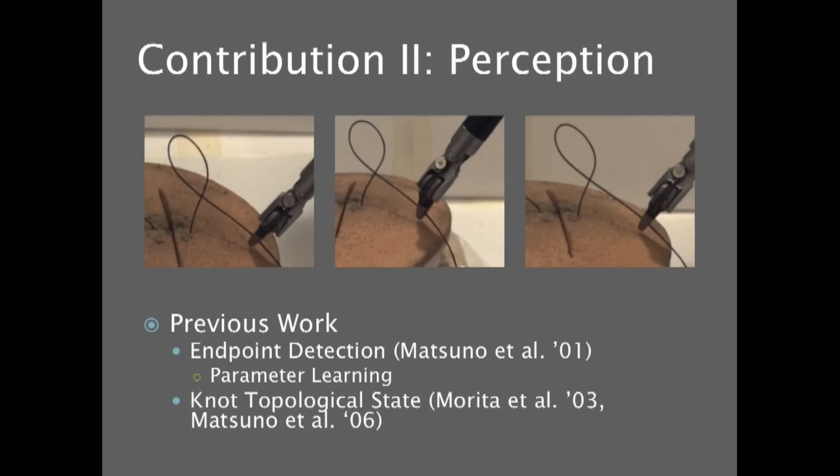And secondly, we're going to build a system for perception. In the past, people have approached this problem by attempting to find the endpoints, as well as the topological state of the knot. But we're actually going to try to recover the full 3D configuration of the system.